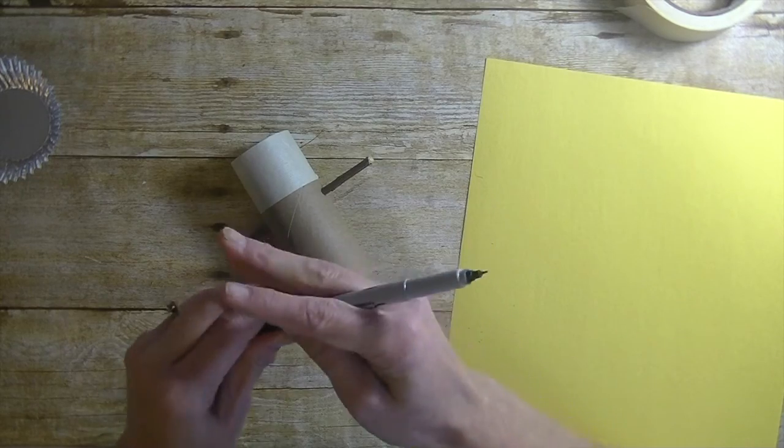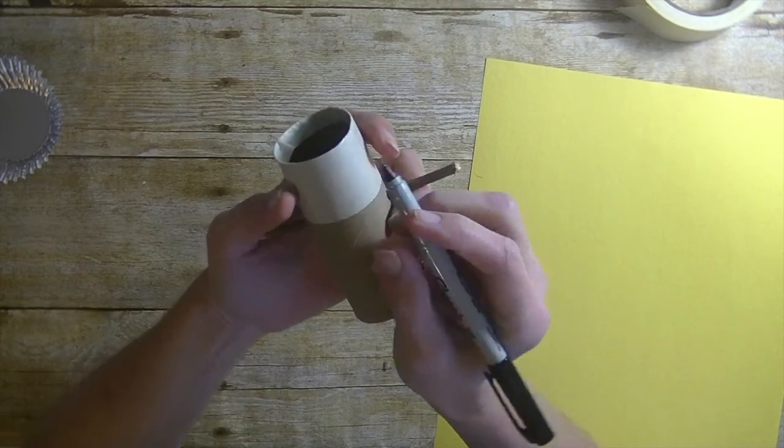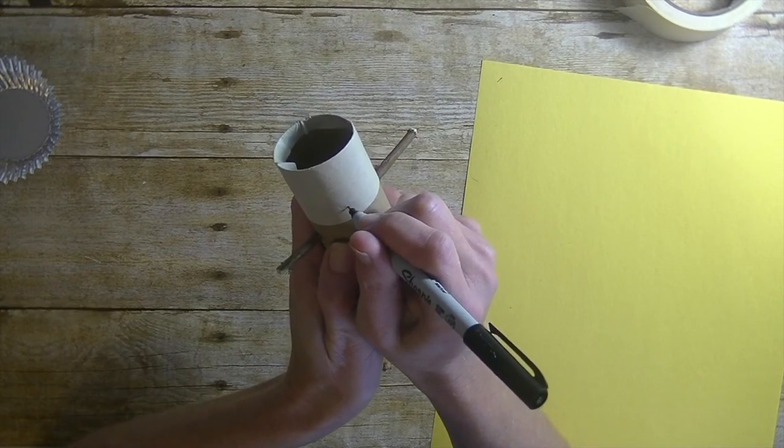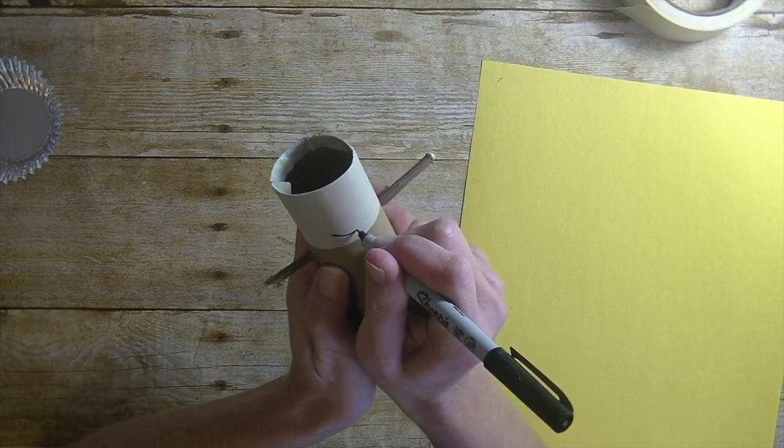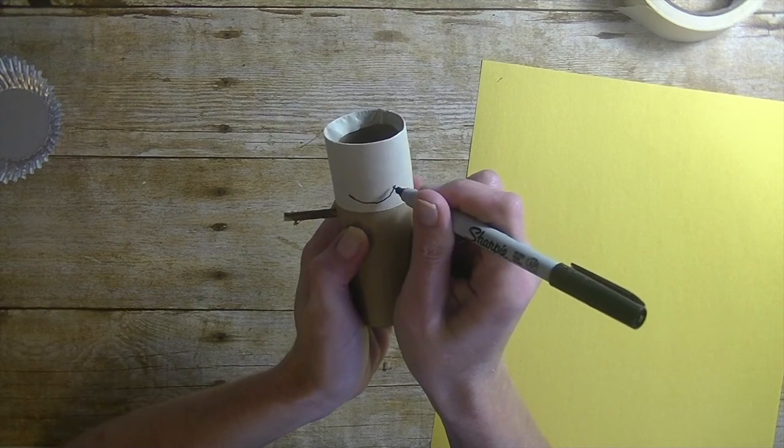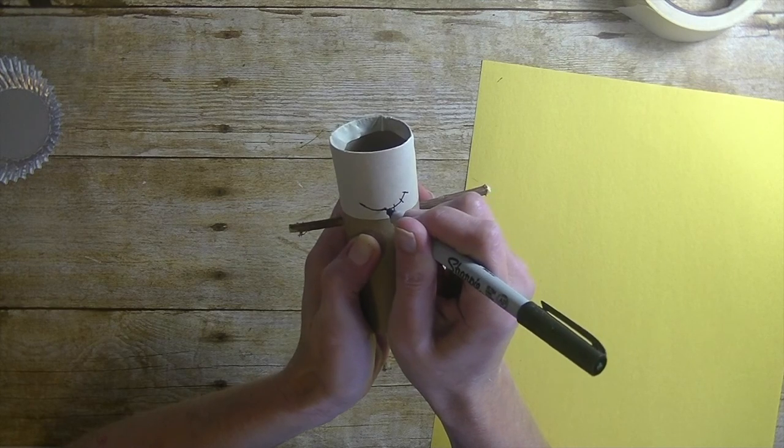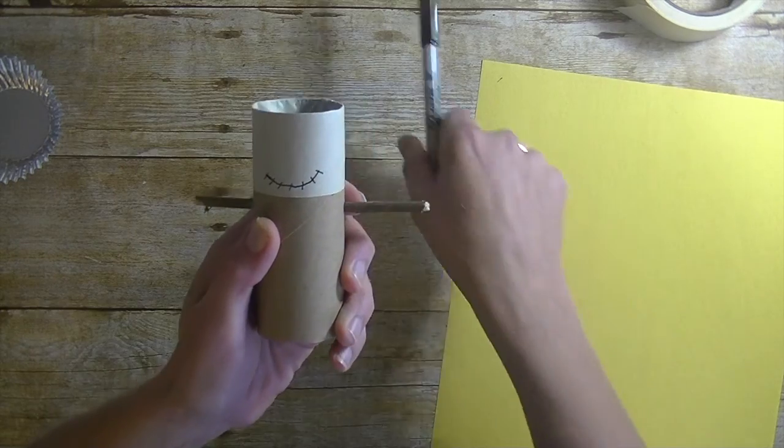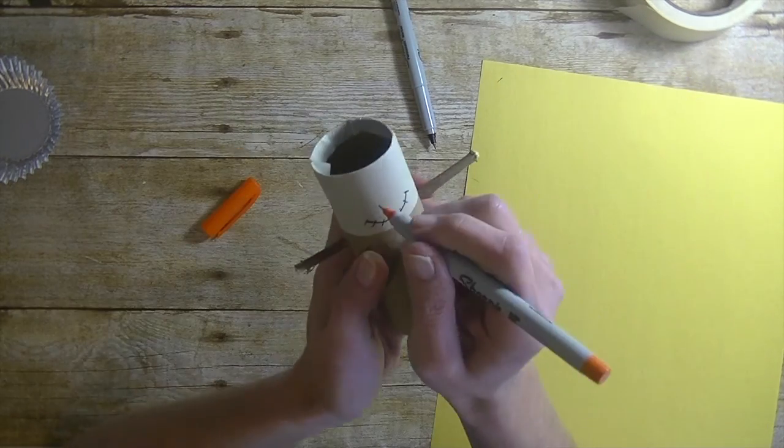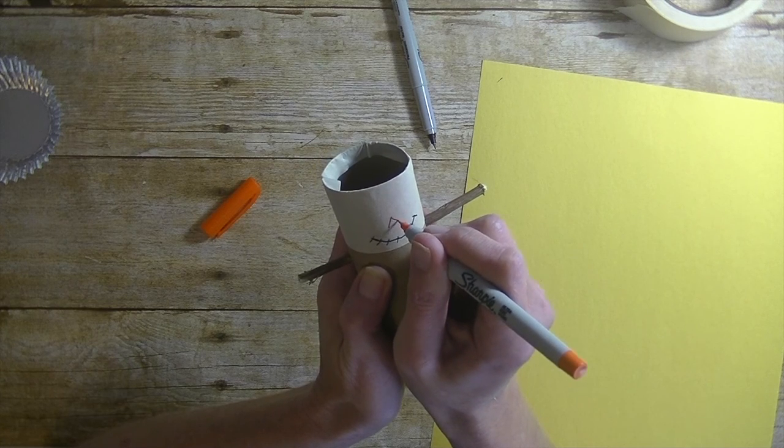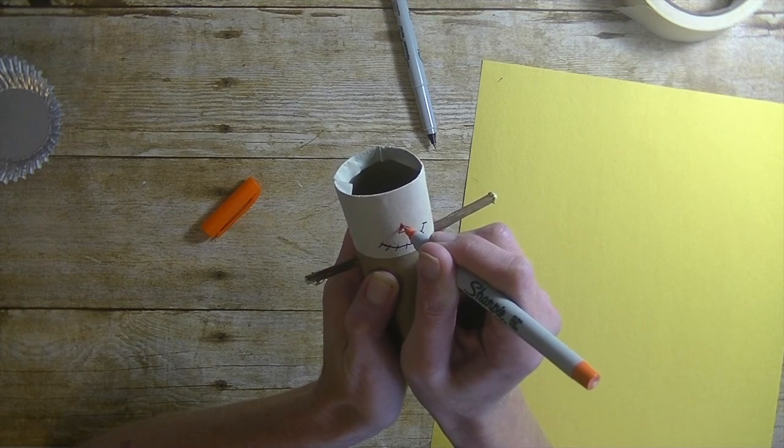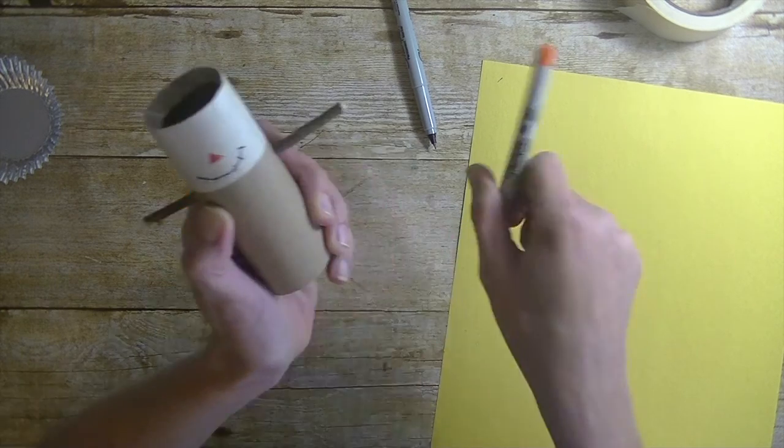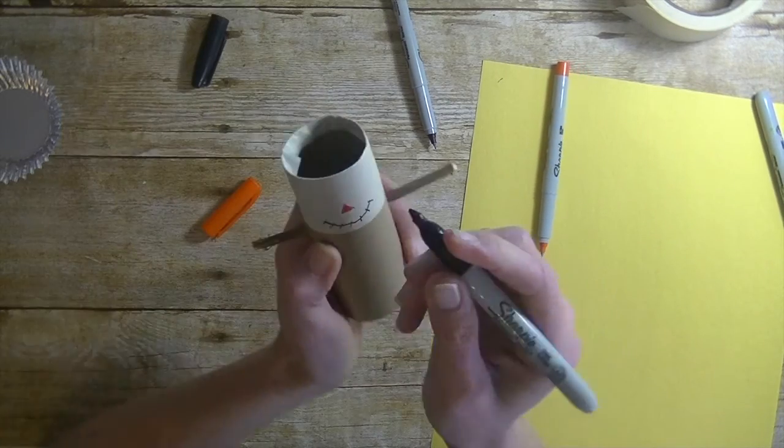You want to take some markers. I'm using a black ultra-fine Sharpie marker. We're going to draw a little happy face on him first, like that, and then just draw little lines. Now we have a smile. Take an orange marker and draw a triangle for the nose, and then color that in.